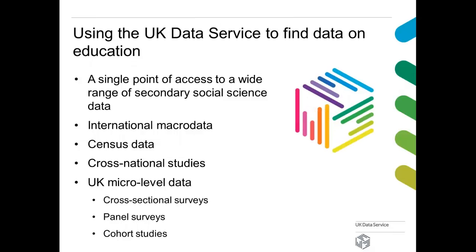If you're not familiar with the UK Data Service already, we are a single point of access to a whole host of different social science data. That can include international macro data — for example, if you want to compare different countries we have things like the OECD education statistics. We've also got individual and aggregate level census data, cross-national studies, and many thousands of micro-level data surveys from the UK, including cross-sectional, panel and cohort studies.